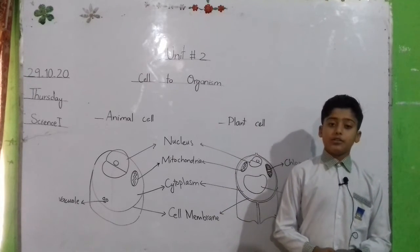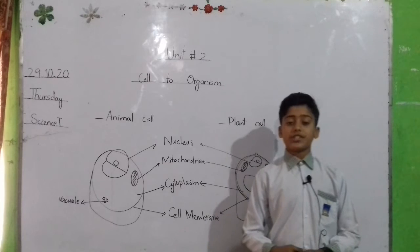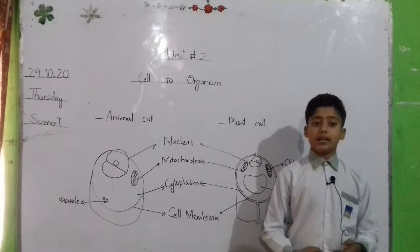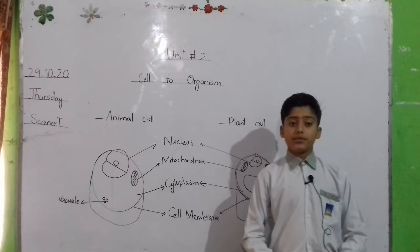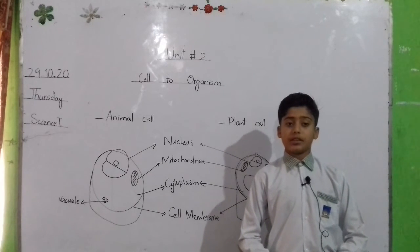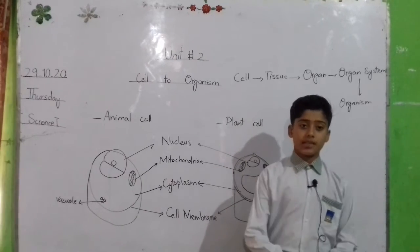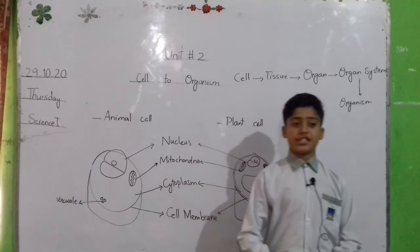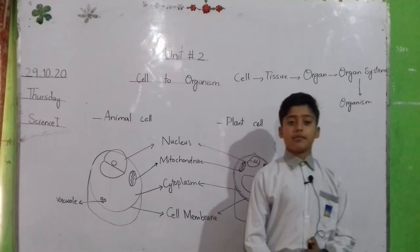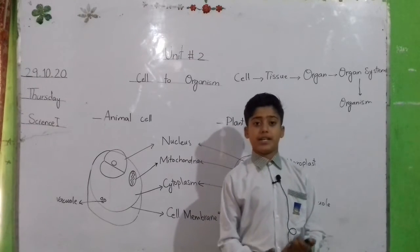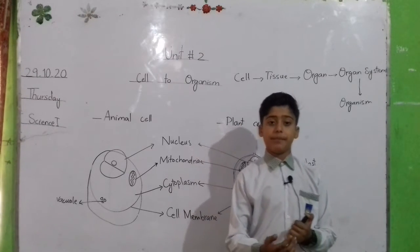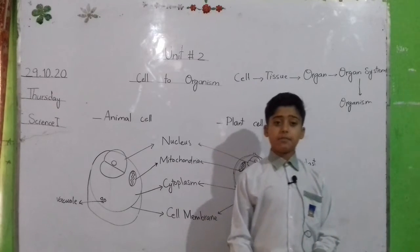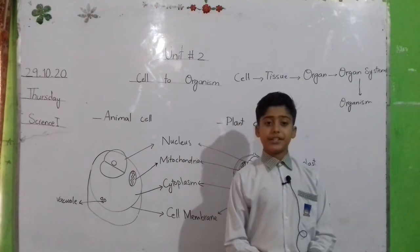Unicellular organisms. Those organisms which are made up of one cell are called unicellular organisms. Multicellular are those organisms which are made up of many cells. For example, humans, plants, etc.